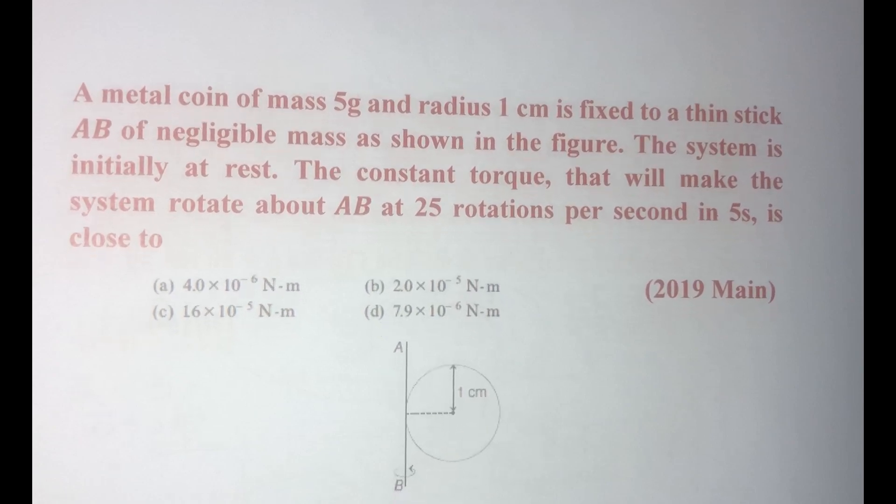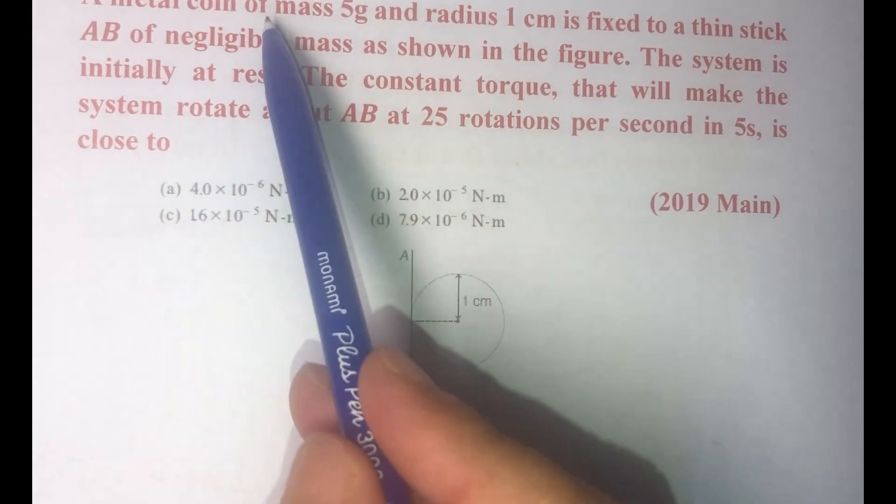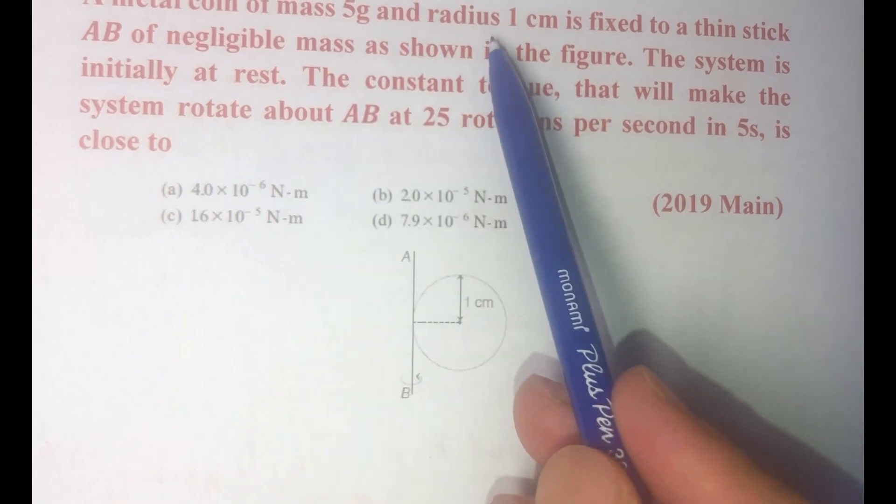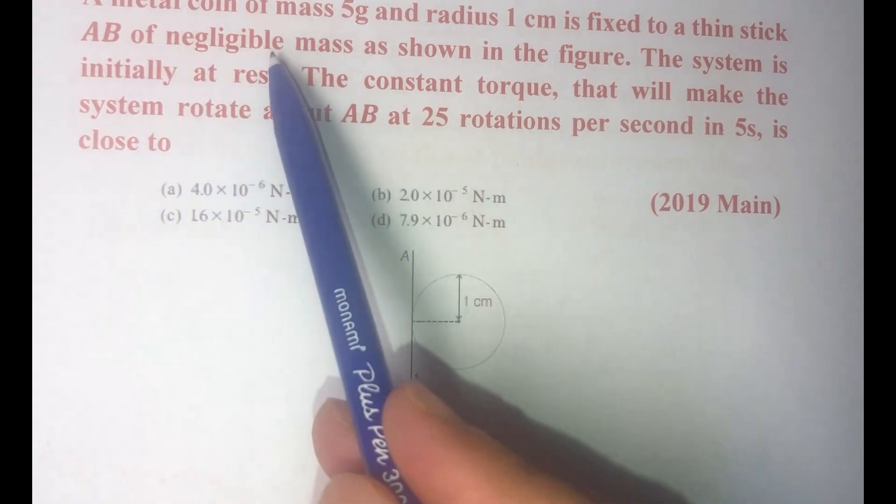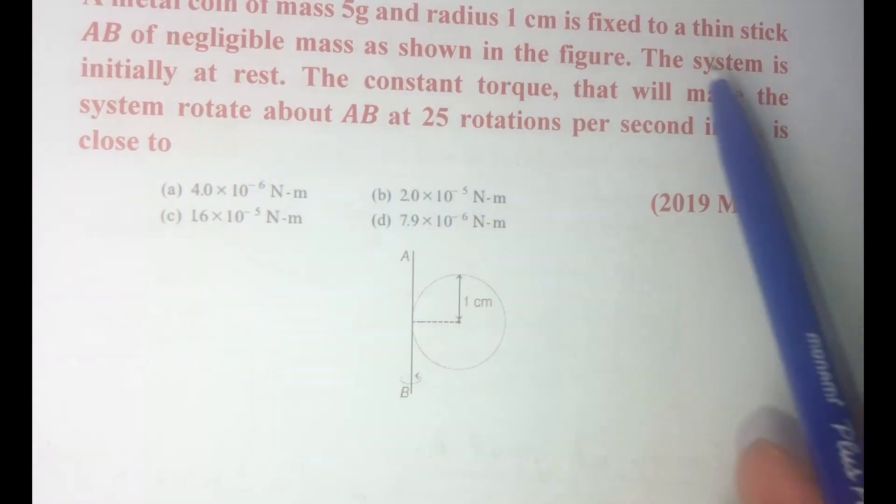Hello friends, in today's question a metal coin of mass 5 gram and radius 1 centimeter is fixed to a thin stick AB of negligible mass as shown in figure.